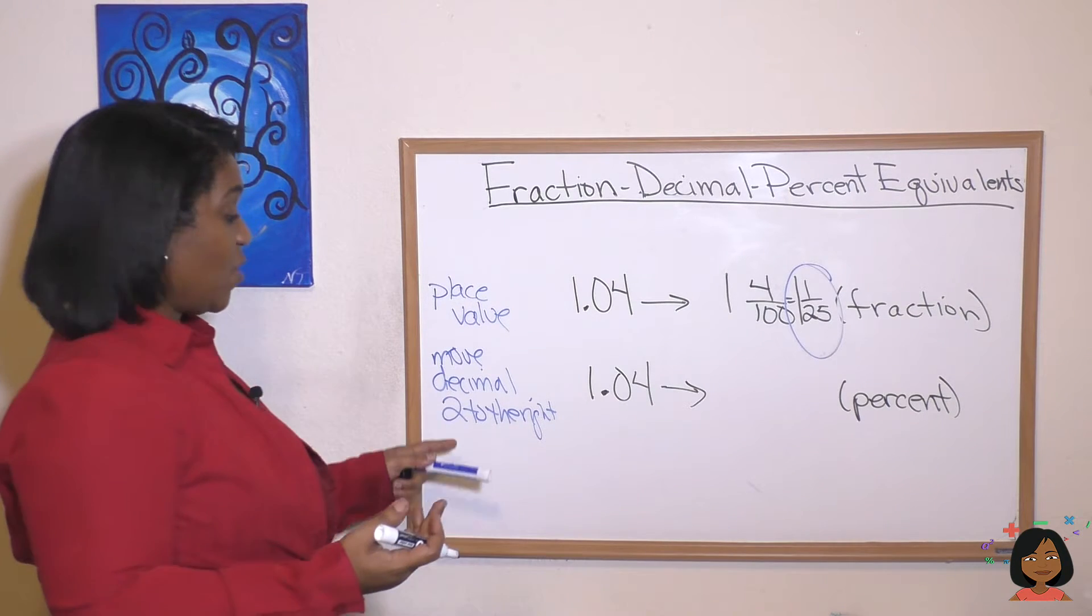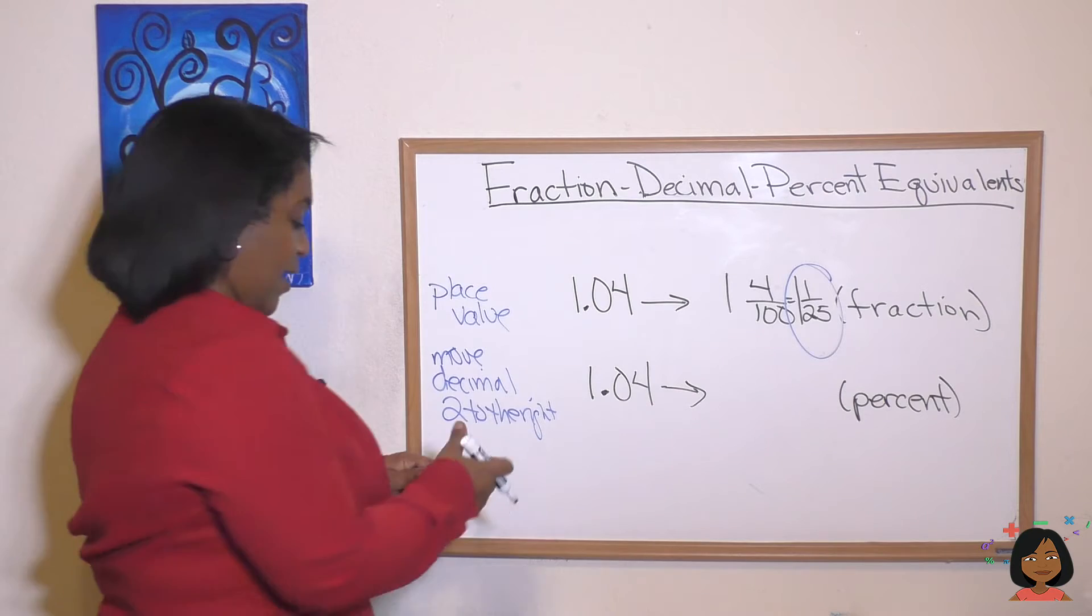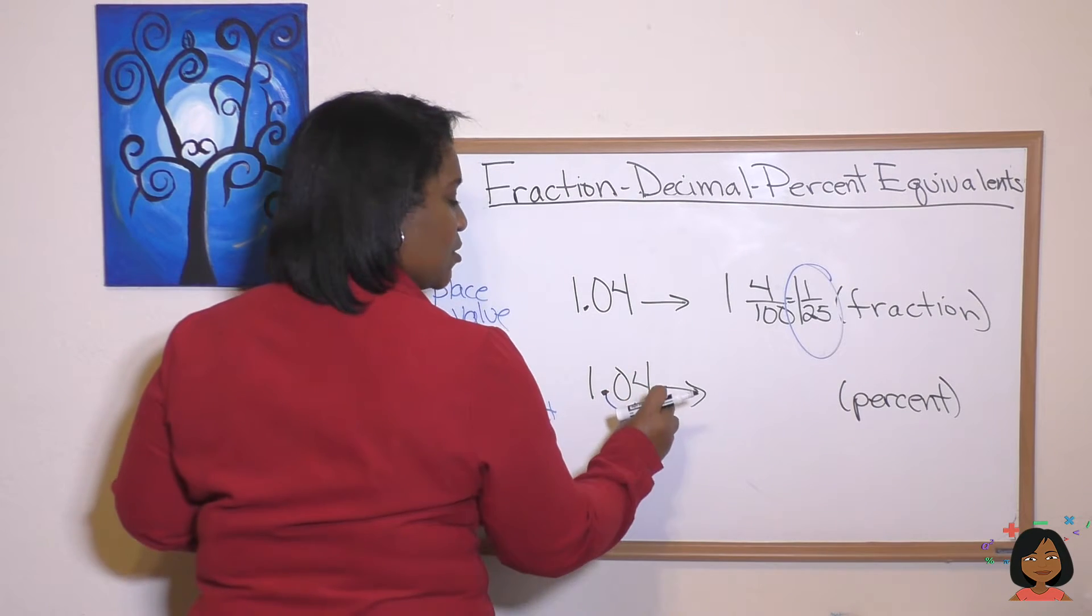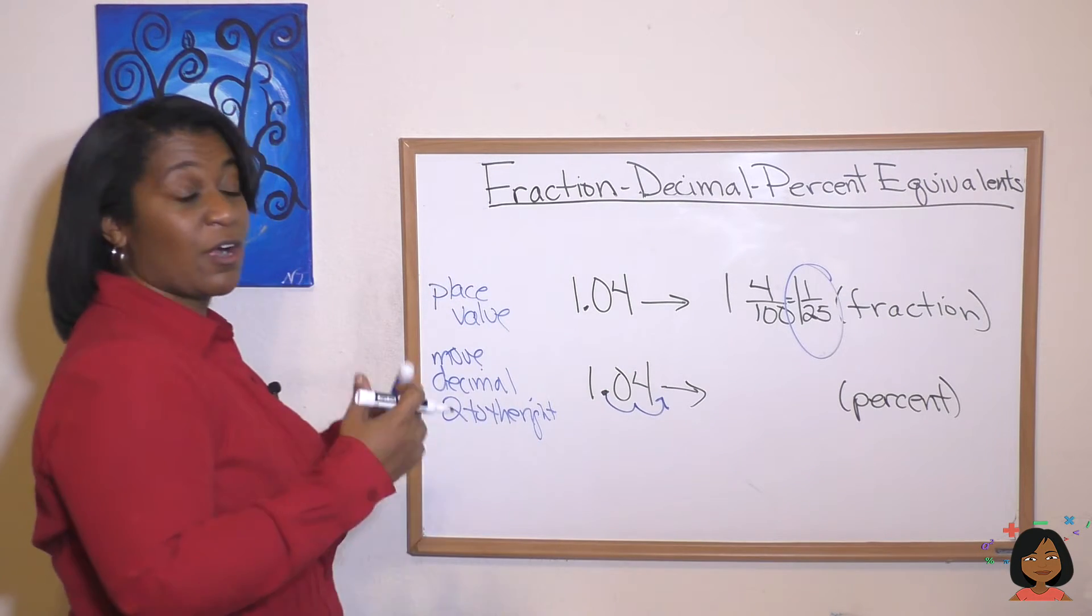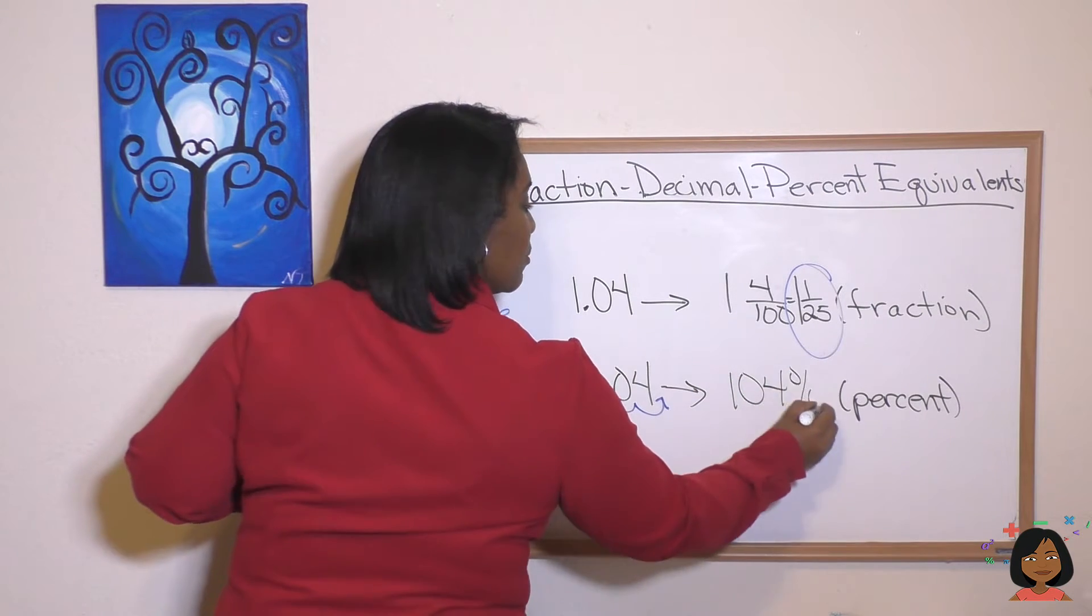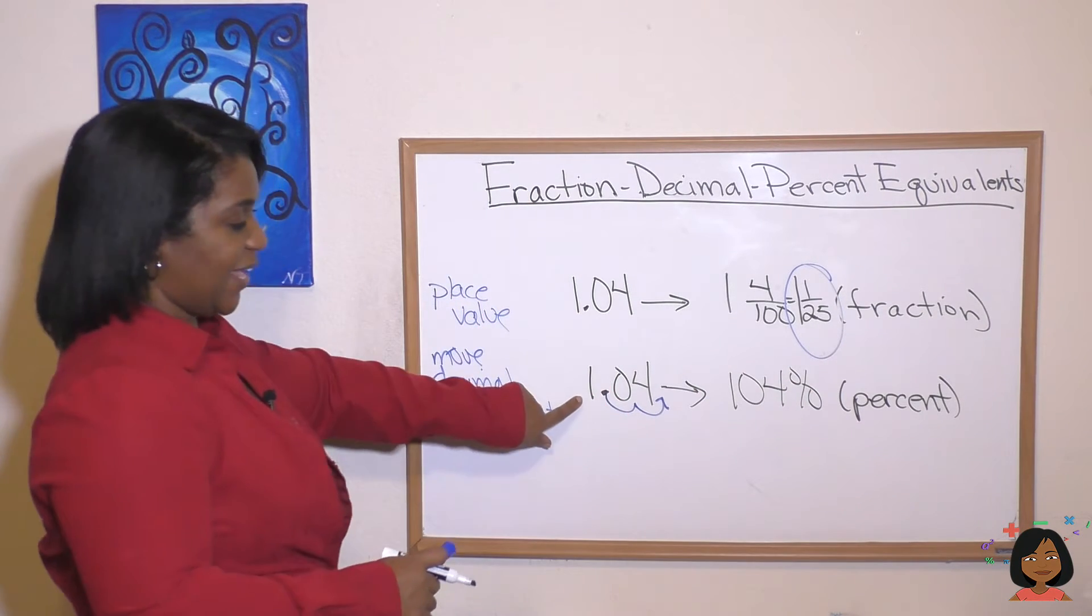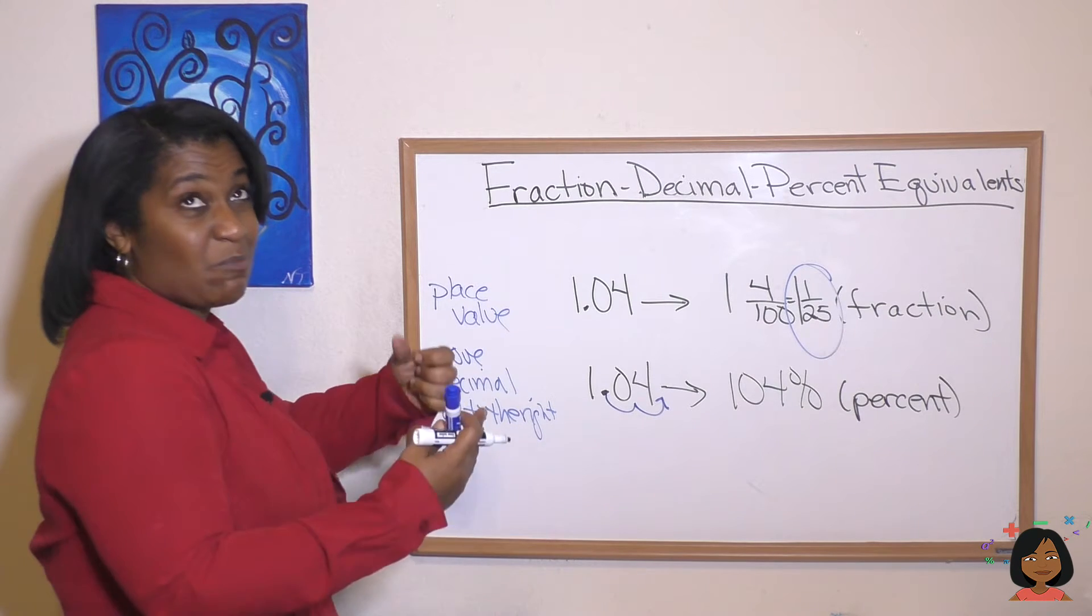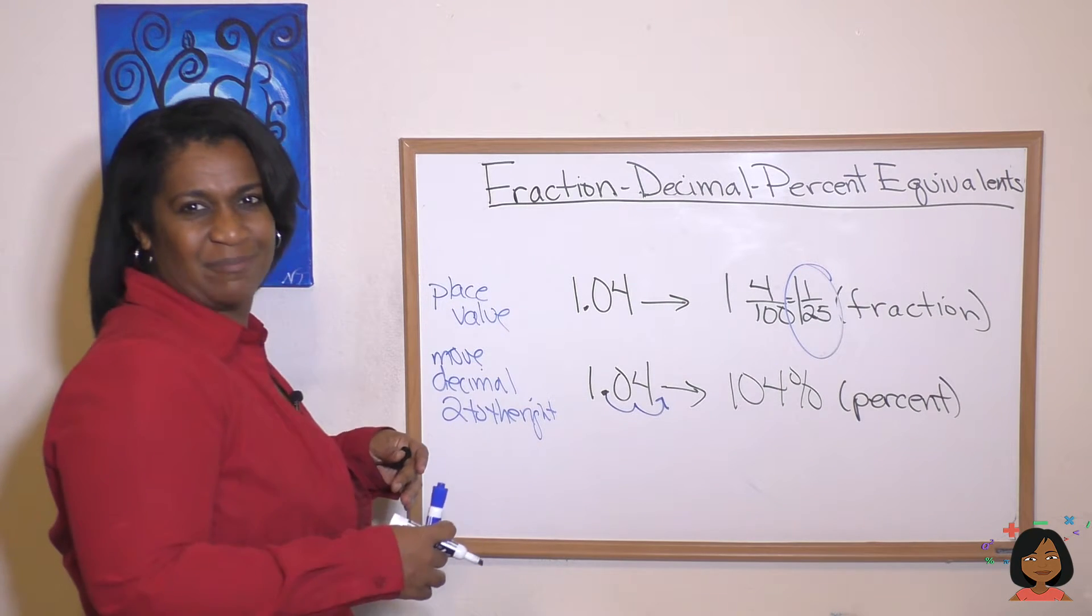What about that as a percent? Well move the decimal two to the right. Let's do it. 1, 2. That means that our percent is going to be 104 percent which makes sense because we already have a whole. What would mean it means it's more than part of the whole.